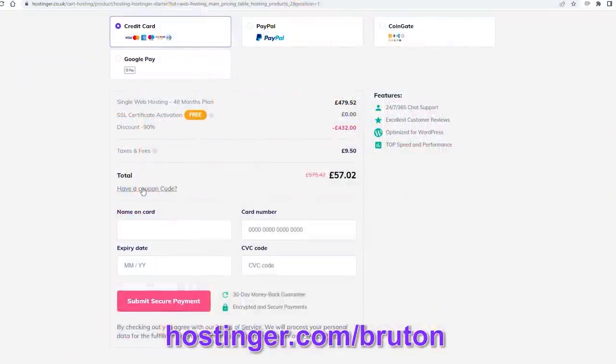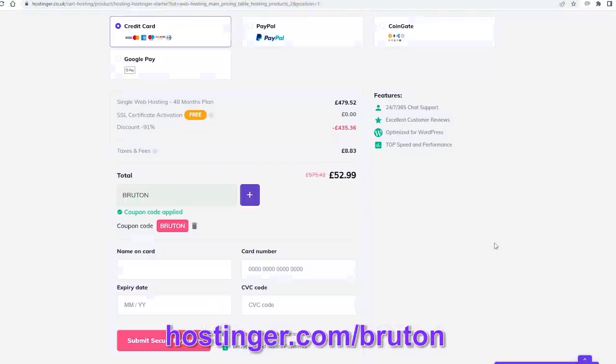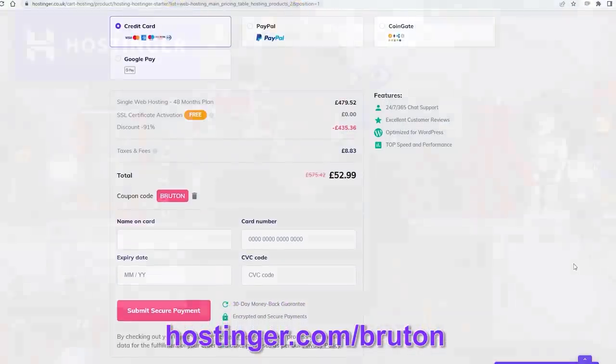So don't forget to check out balancingrobots.tech to see some of my projects and if you want to host a website of your own you can go to my special link hostinger.com slash Bruton and use my special coupon code Bruton to get up to 91% off all yearly plans.